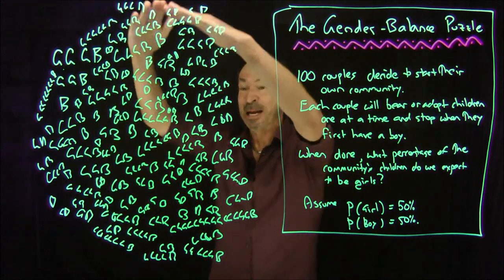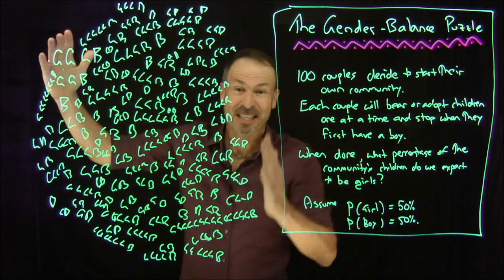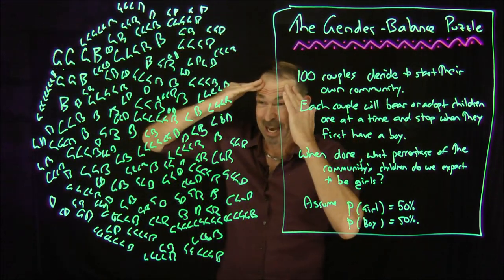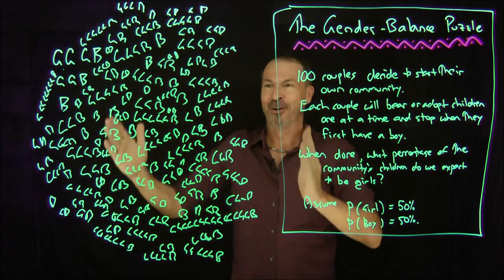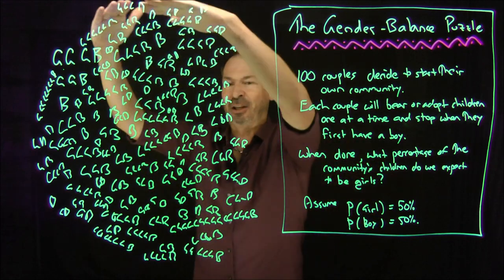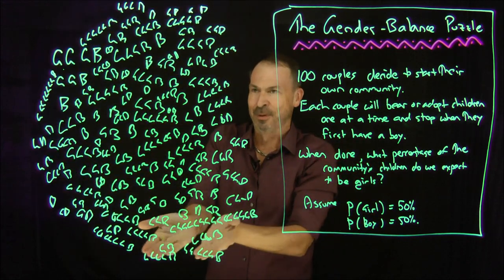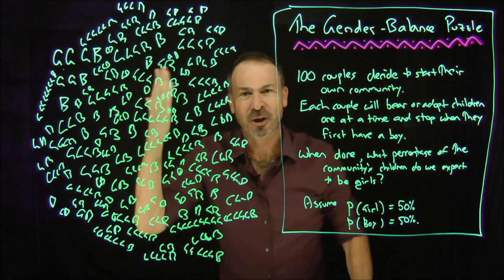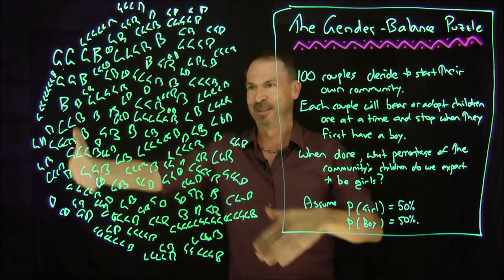Whoa, so we'll end up with some data like this. Obviously, I just made this up. I think I lost count. That might not be 100 data points. But we will have 100 couples, each bearing or adopting children, each stopping as soon as they have a boy. So we're asking now, here's a community of children, 100 couples having all their children, what percentage of girls do we expect amongst this picture of data like this?